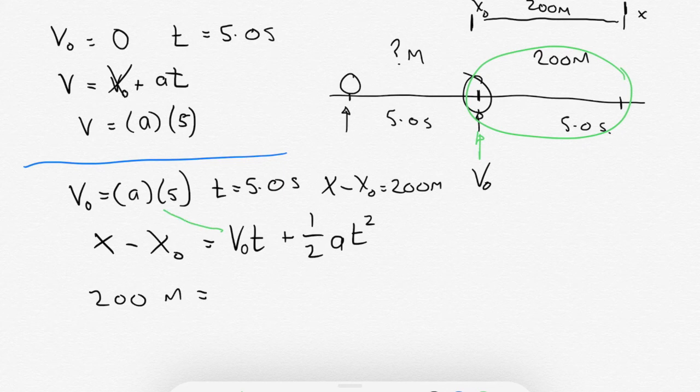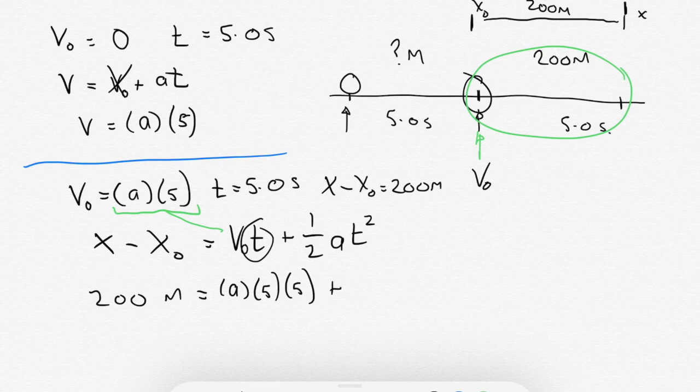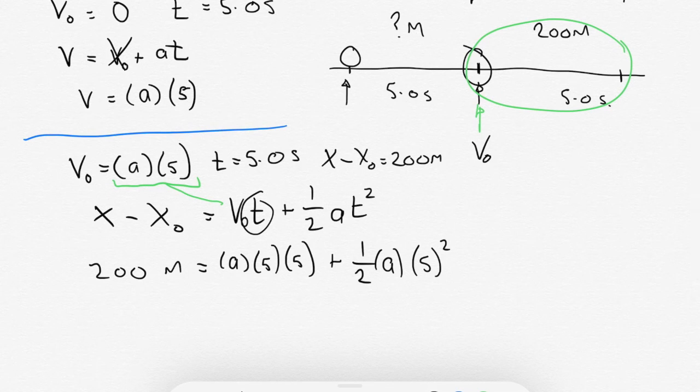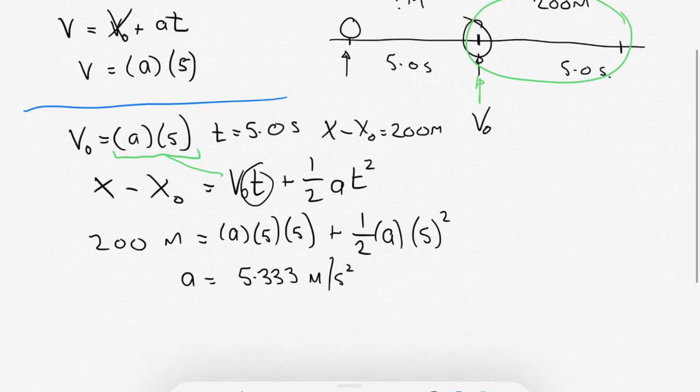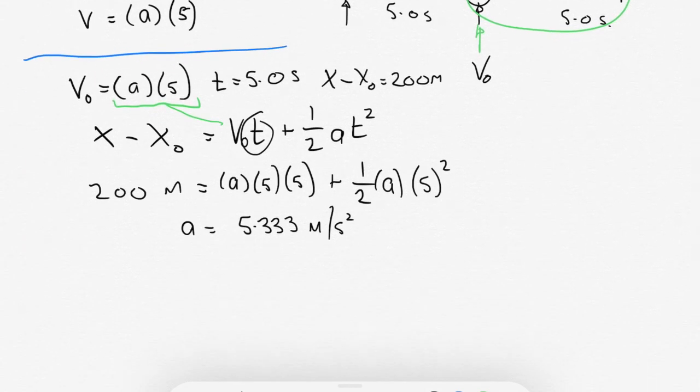We need to make the link between what our V0 is here. Our V0 is A times 5, and then T in this equation here is another five seconds. So we've got A times 5 times 5 plus one half times the acceleration times five seconds squared. So if we solve this equation now for A, we get A is equal to 5.333 meters per second squared. So the acceleration of the ball right from the point where it starts moving through the first five seconds is 5.333 meters per second squared.